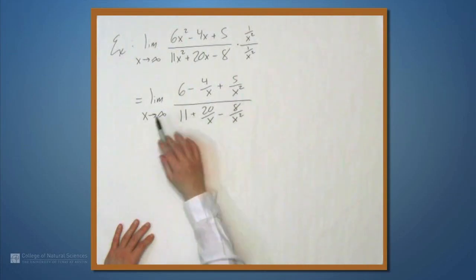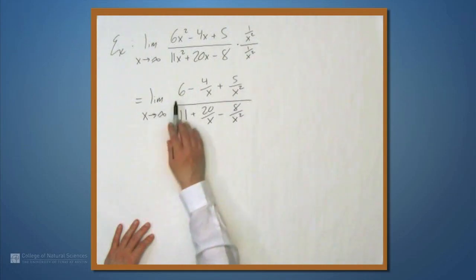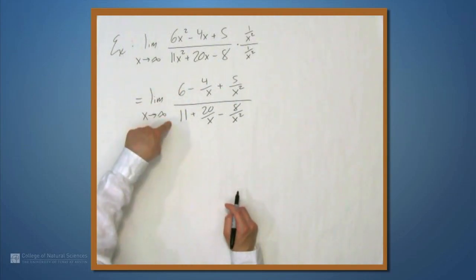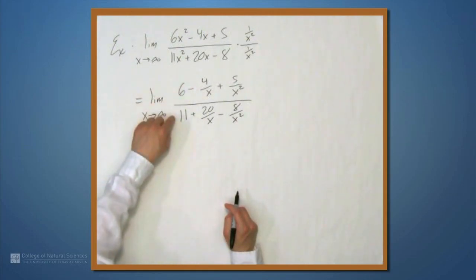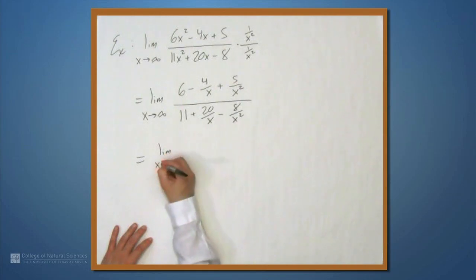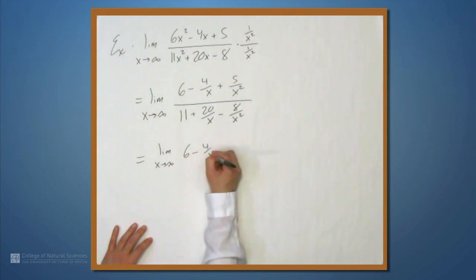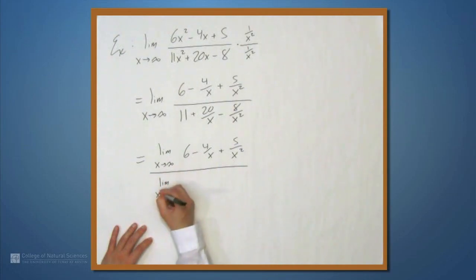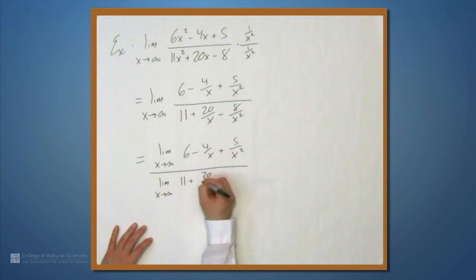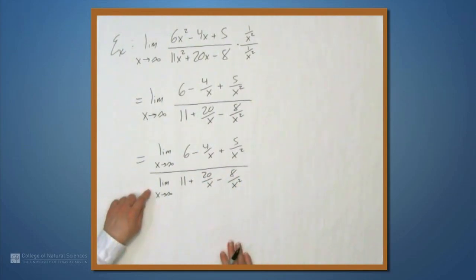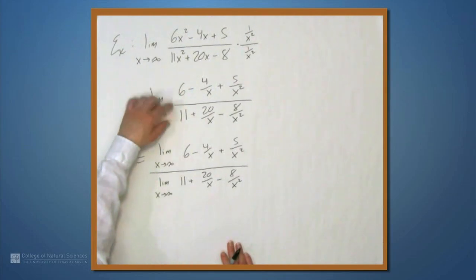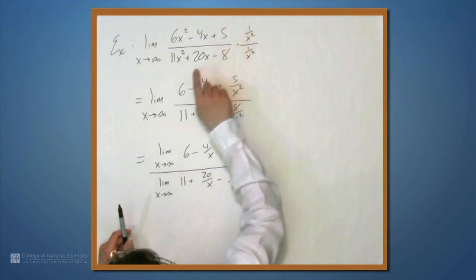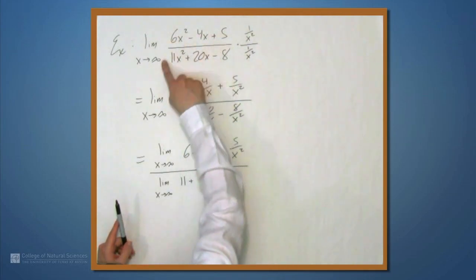Now we have a limit that we can evaluate. To do this thoroughly, we have to apply some limit laws. One of them is that if you have the limit of a ratio, and the numerator and denominator limits both exist, then the limit of that ratio is the ratio of the limits. It's really important to notice that we can do this at this stage, because in this modified form the limits both exist. In the original form, the numerator was going to infinity and the denominator was going to infinity.